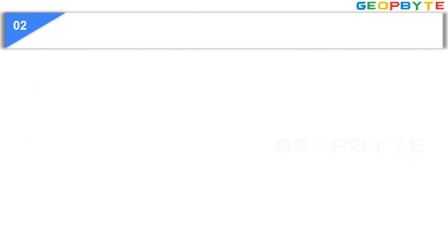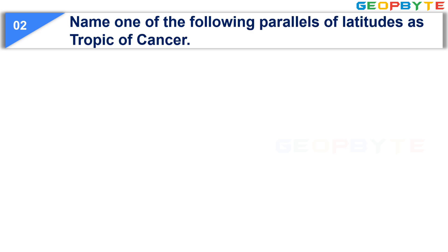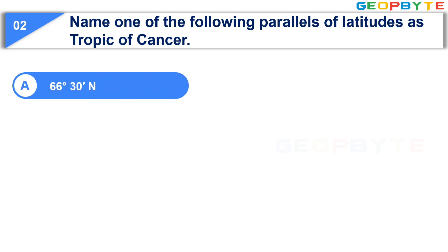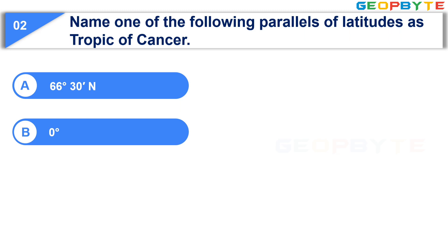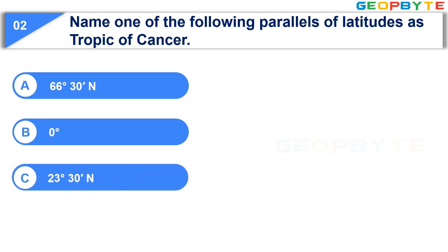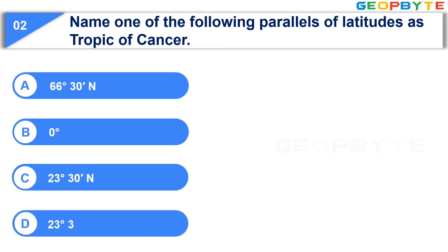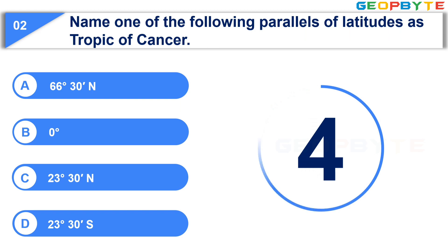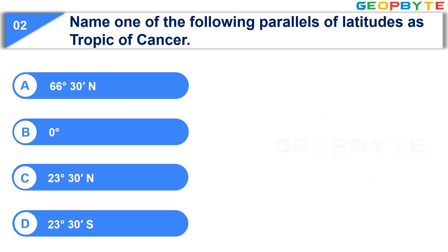Moving to the second question. Name one of the following parallels of latitudes as Tropic of Cancer. Option A: 66 degrees 30 minutes north. Option B: 0 degrees. Option C: 23 degrees 30 minutes north. Option D: 23 degrees 30 minutes south. Your time is up and the correct answer is Option D: 23 degrees 30 minutes south.